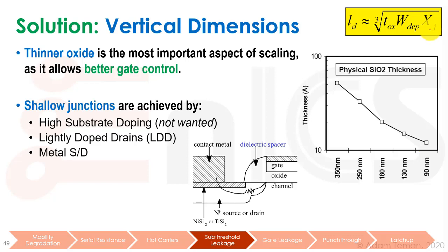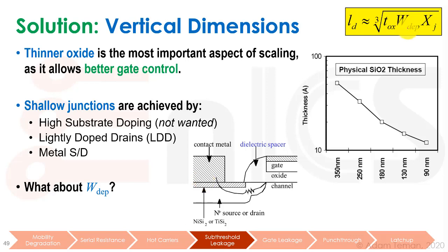The next part is Xj — shallow junctions. We want shallow junctions, achieved by different means. We can have high substrate doping, though too much makes it harder to turn on the transistor and harder to deplete the channel. Lightly doped drains (LDDs) are one way of getting shorter effective channels. Metal source drains would reduce depletion but cause a Schottky diode. There are also raised source and drain approaches that are used.